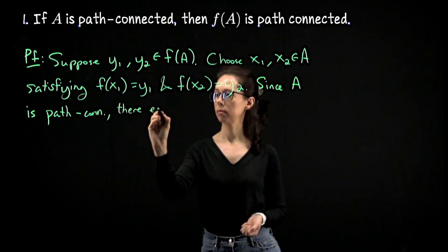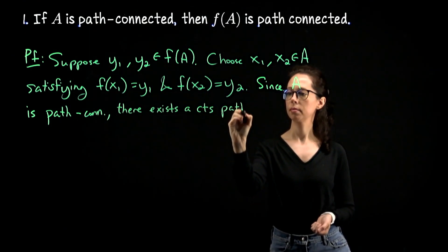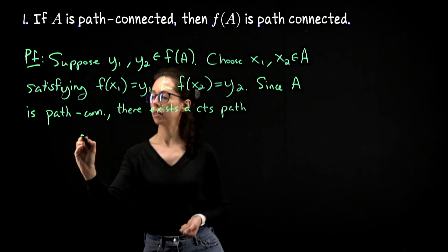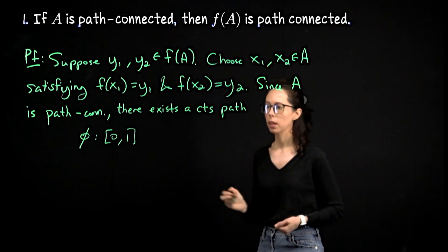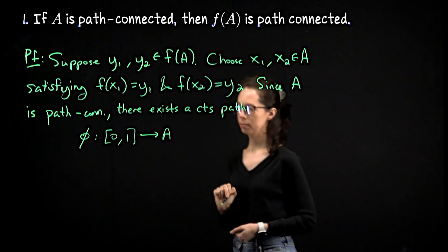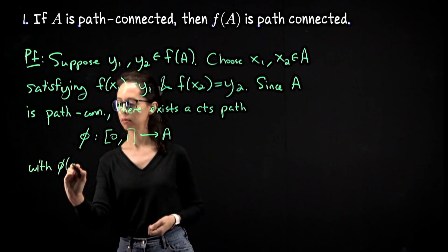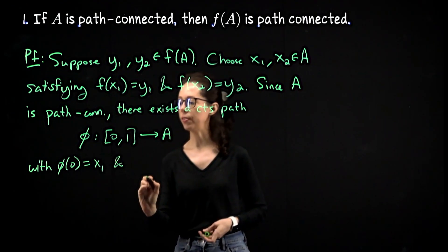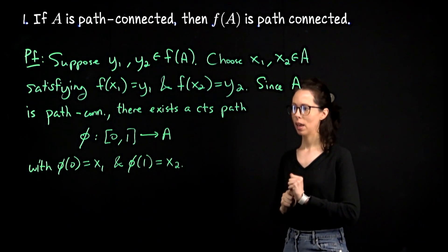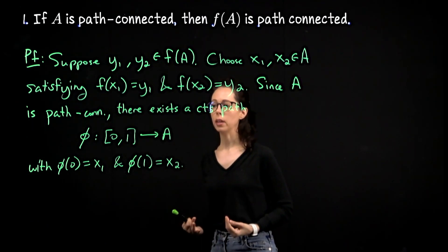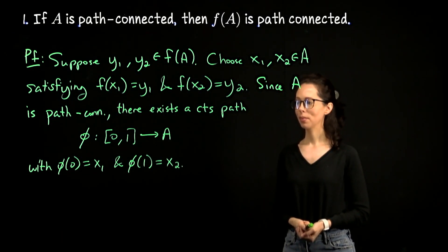we know that there exists a continuous parametrizable path from x1 to x2, which lives in A. So there exists a continuous path φ taking us from the unit interval—that's like the domain for the parameter, φ of t, if you will—to A with φ of 0 equal to x1 and φ of 1 equal to x2. When I write this notation here, I mean that the domain of the parameter goes from 0 to 1, and by saying it maps to A, we're saying the path lives in A.